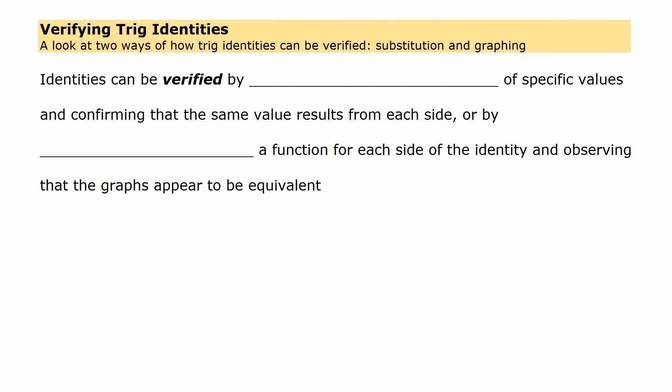Identities can be verified by a couple of different methods here. One is by substitution of specific values and confirming that the same value results from each side when you evaluate it. Or the other way is by graphing both sides of the identity, a function for each side, and seeing that the two graphs appear to be equivalent.